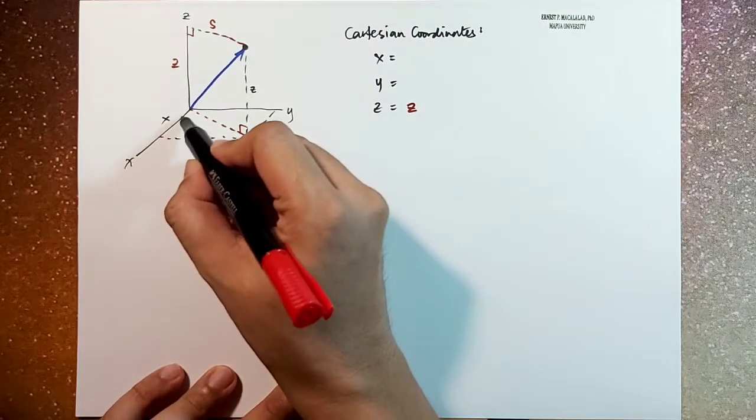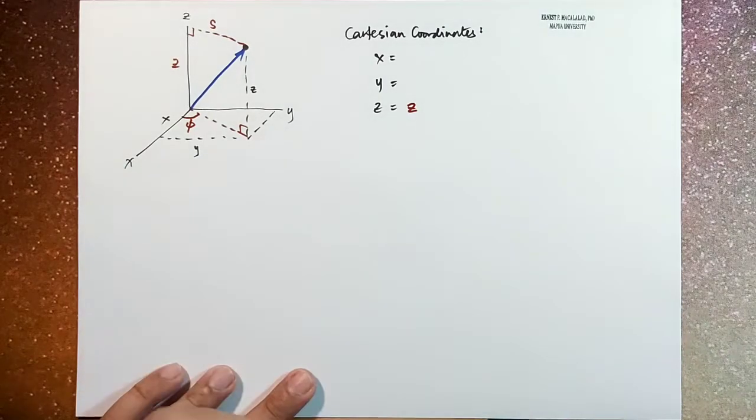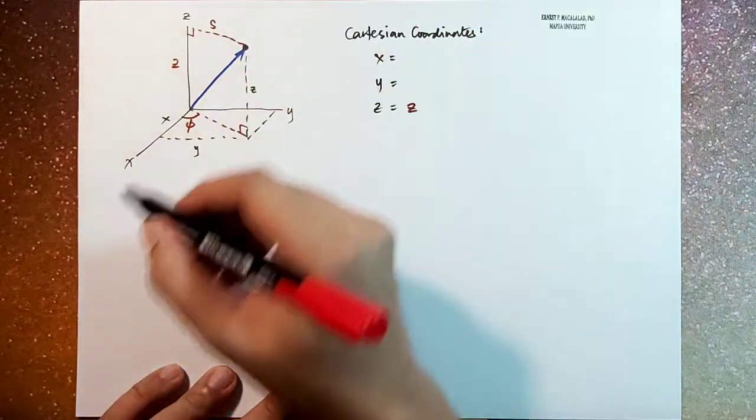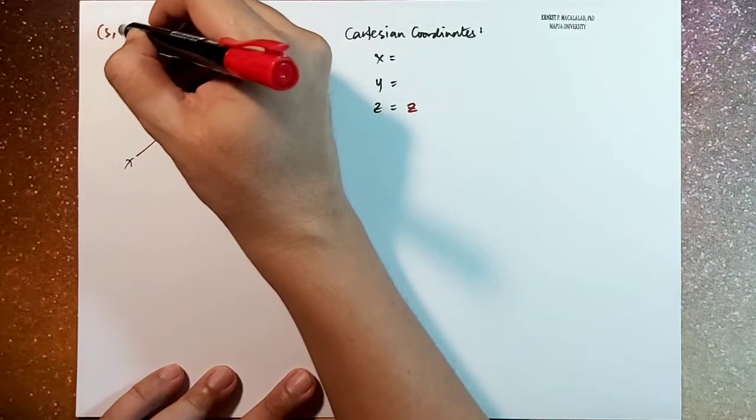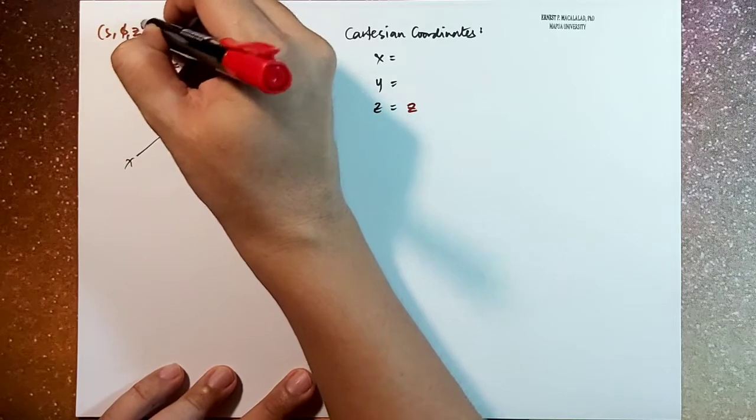this angle is your azimuthical angle, and that's your phi. So the cylindrical coordinate system, the components are s, phi, and z.